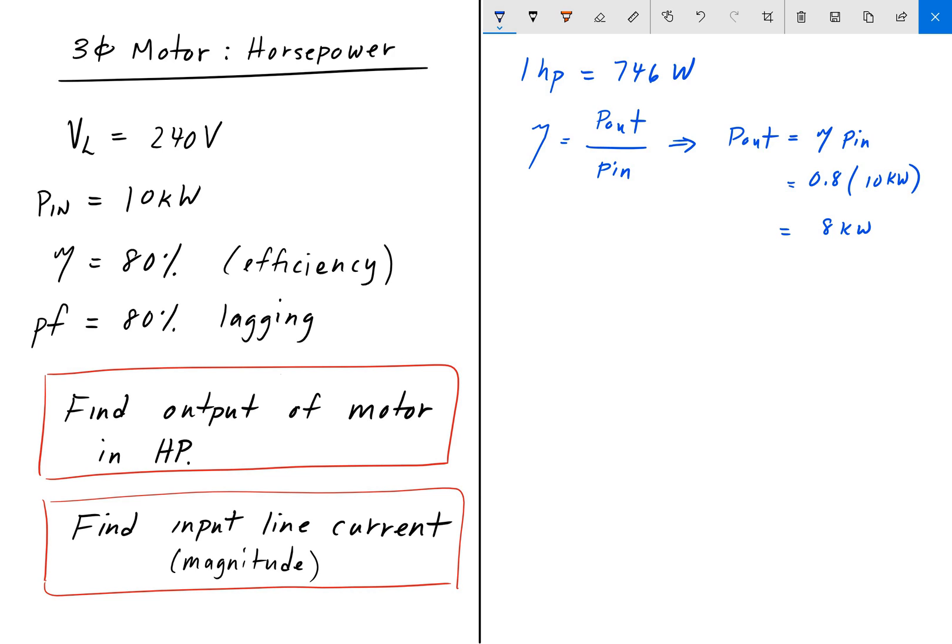And so what we want to do is we want to turn that 8 kilowatts into horsepower. And so the way we'll do that is that's 8 kilowatts divided by 746, which gives us about 10.7 horsepower. So that's the answer to the first part.